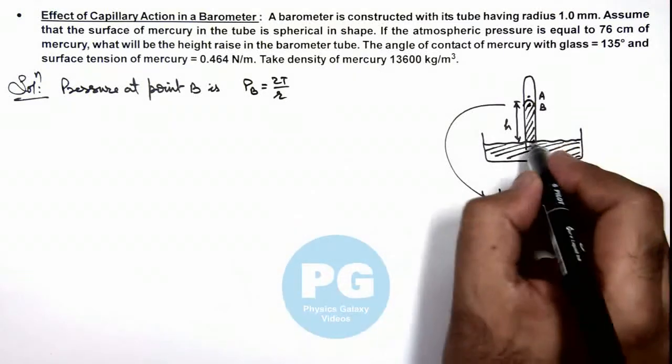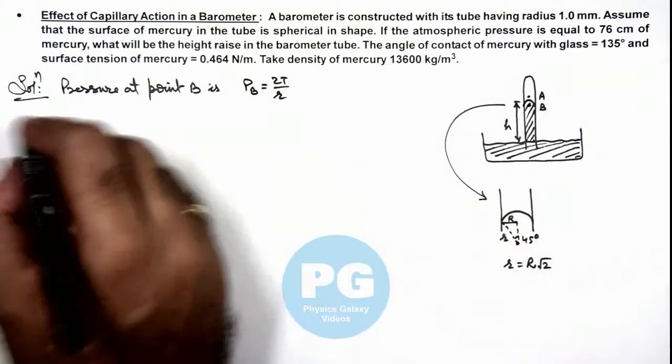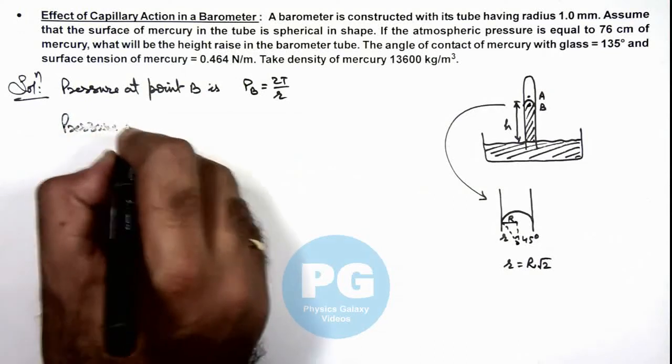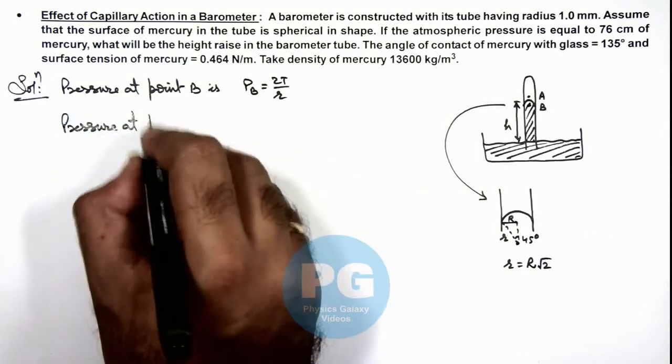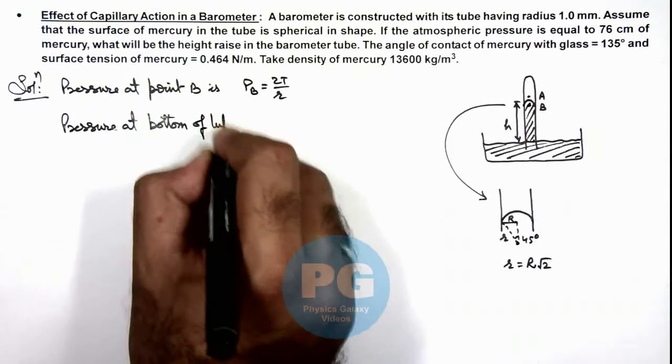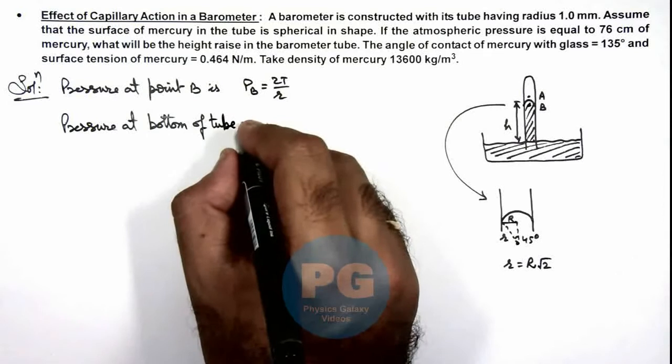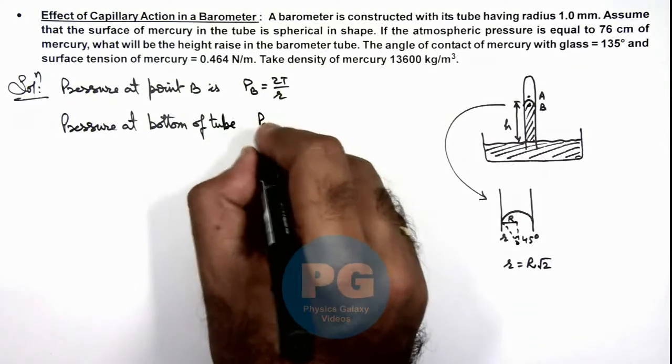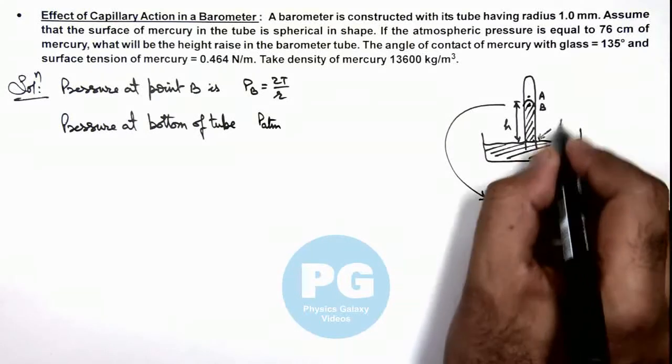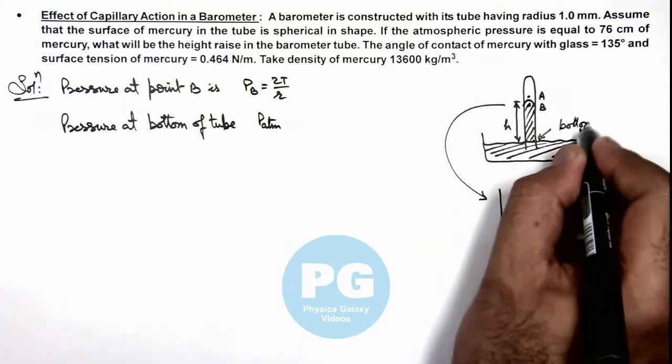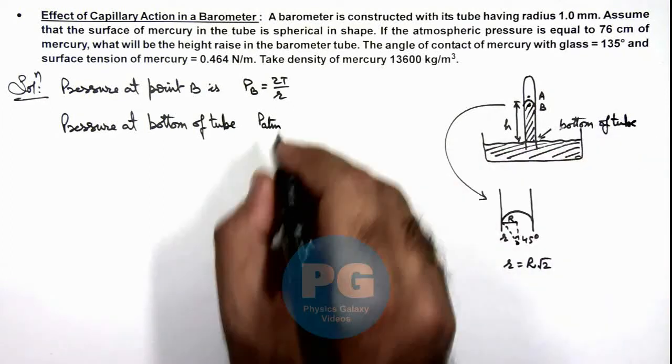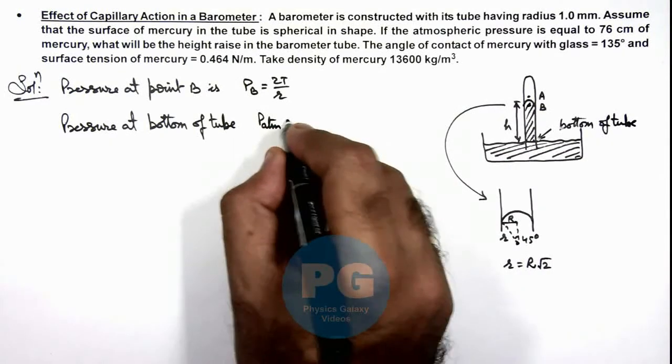Then if we calculate at the bottom of tube, we can write pressure at bottom of tube, that is atmospheric pressure. Bottom means we are talking about this point we are considering as bottom of tube.